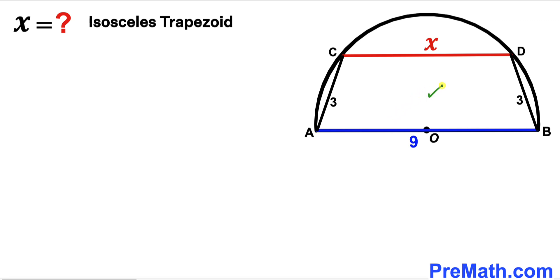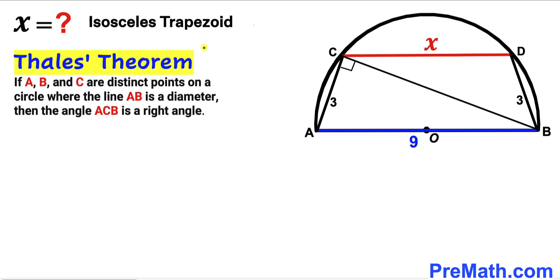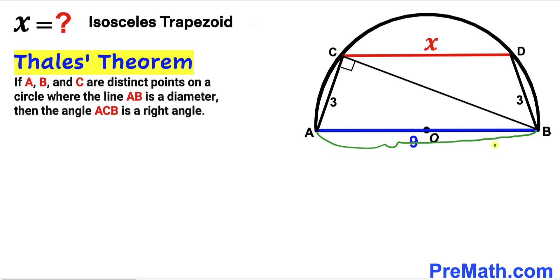Let's focus on this trapezoid ABDC. Since this side length is parallel to this side length, and this trapezoid is called an isosceles trapezoid since this leg is the same as this leg. In this next step I am going to connect points B and C. Now let's recall the Thales theorem: if A, B, and C are three distinct points on the circle where line AB is the diameter, then angle ACB is a right angle — 90 degrees. So this angle ACB is going to be a 90-degree angle since points A, B, and C are on the circle, and AB is the diameter of this semicircle.